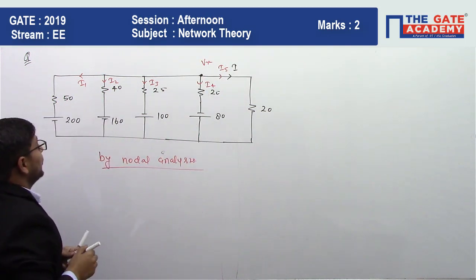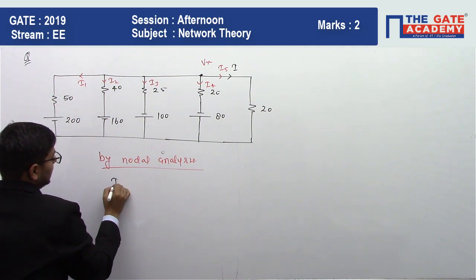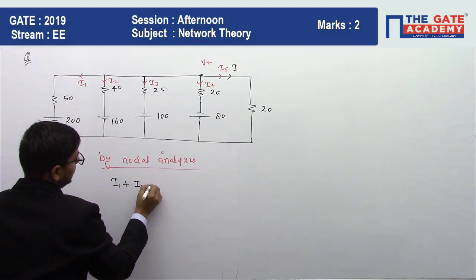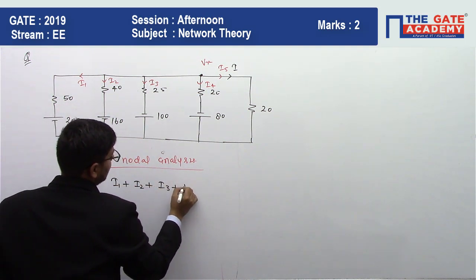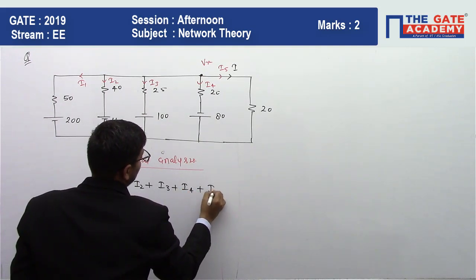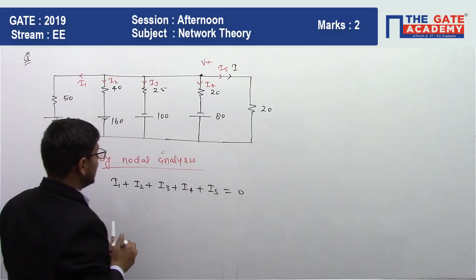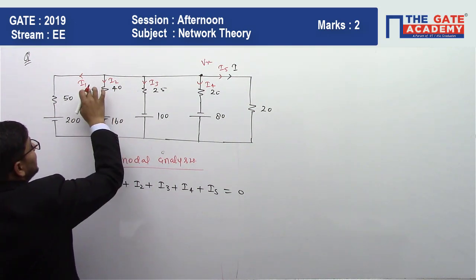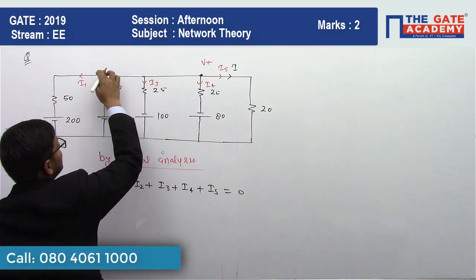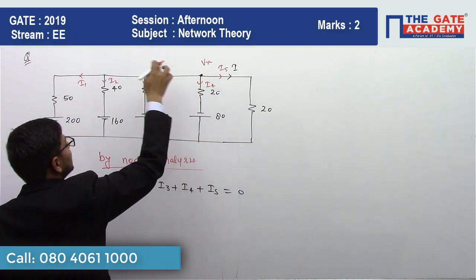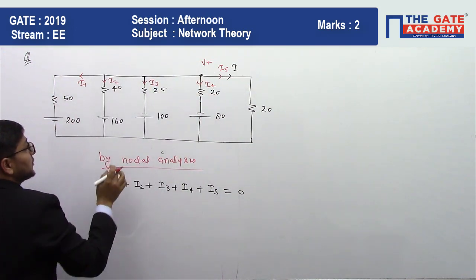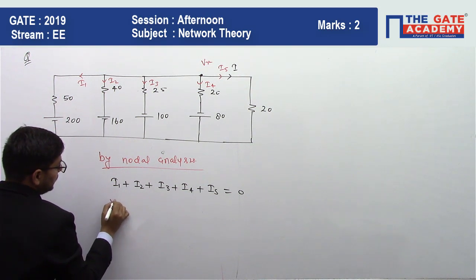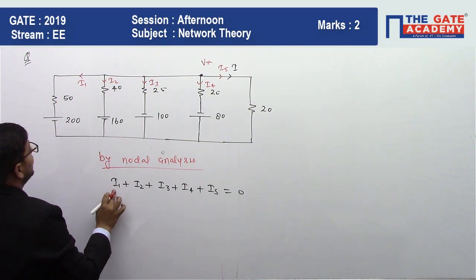Just by applying nodal analysis, we can get I1 plus I2 plus I3 plus I4 plus I5 equal to 0. What will be the value of I1? This point voltage is Vx. Actually this is shorted, so if this point voltage is Vx, then this point voltage is Vx.